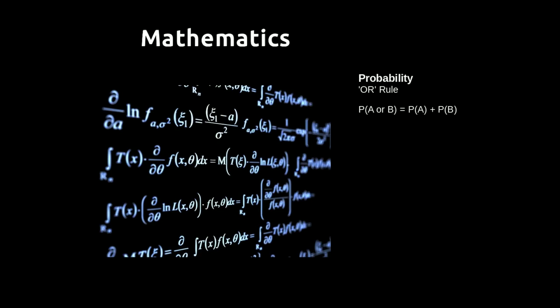In this video we're going to look at the probability OR rule, and that's when we're looking at the probability of something happening or something else happening. The simple rule is: if we want the probability of A or B, it's the probability of A plus the probability of B.